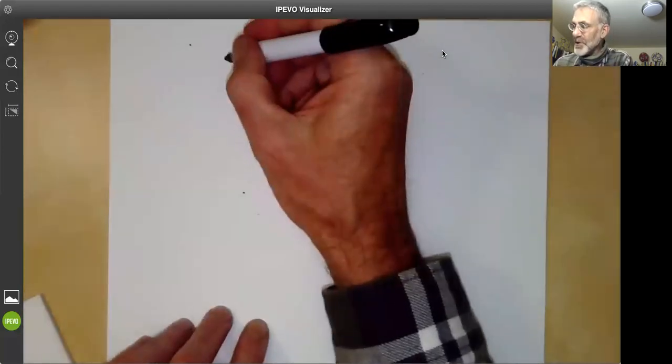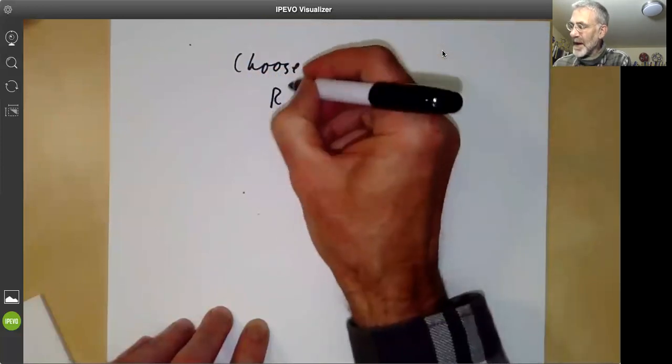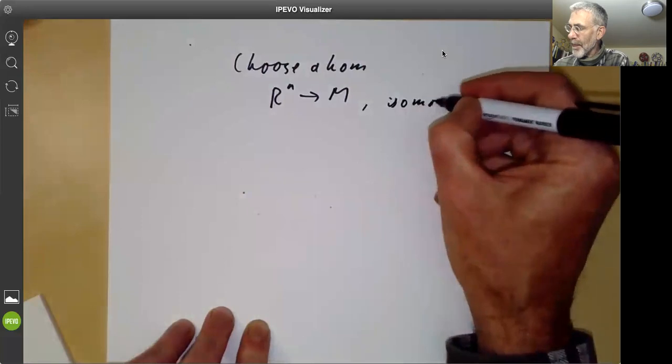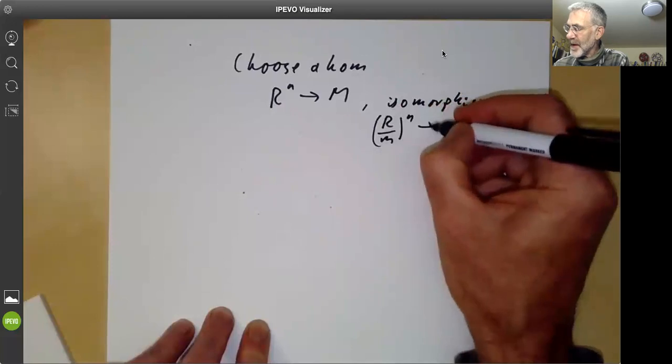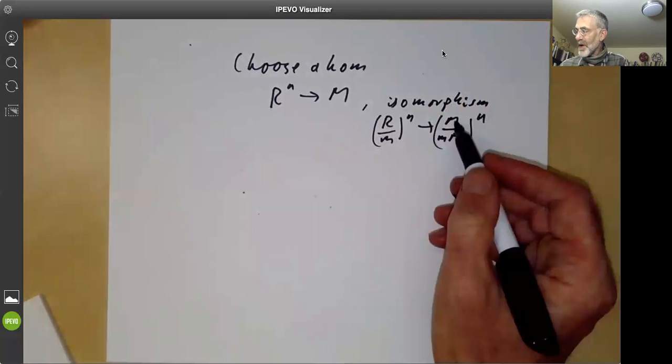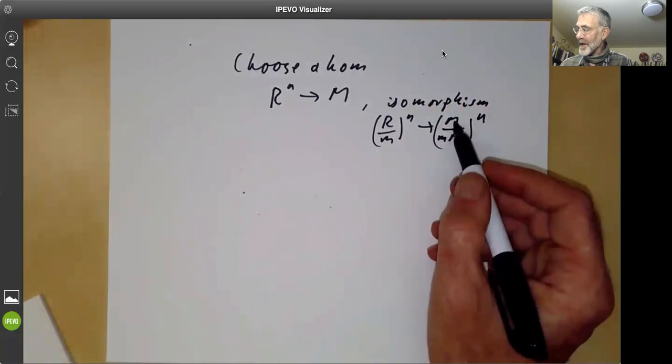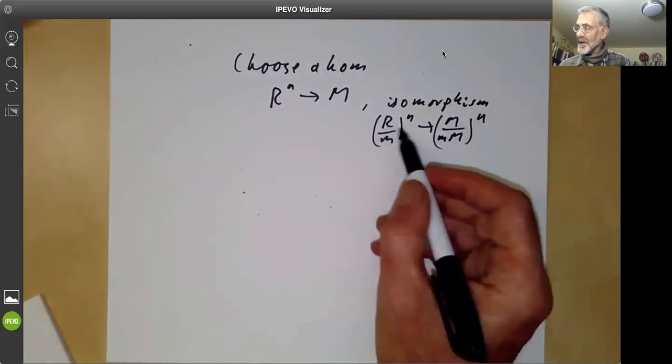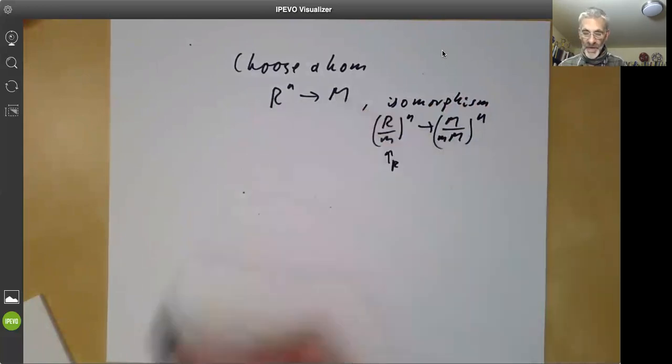So let's show that this funny condition here implies that M is free. And what we do is we choose a homomorphism from R to the N to M, which is an isomorphism from R over M tensor R to the N to M over MM. So M over the quotient out by the maximal ideal is a finite dimensional vector space over the field because M is finitely generated. So we can just take an isomorphism from this finitely generated vector space to it and lift it to a homomorphism like that.